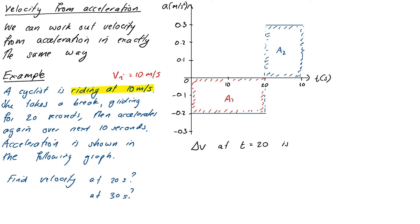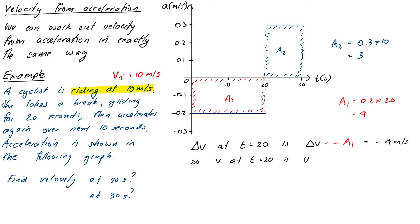We have initial velocity vi equals 10 meters per second and the acceleration graph. To find velocity at 20 seconds, we calculate the signed area under the graph for the first 20 seconds. That rectangle has base 20 and height 0.2, giving an area of 4 — but since it's below the axis, the change in velocity is negative 4 meters per second. So the velocity at 20 seconds is vf equals vi plus delta v equals 10 plus negative 4, giving 6 meters per second.